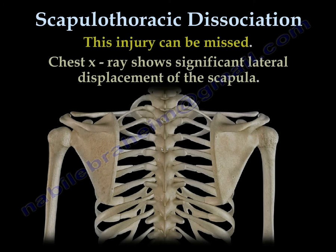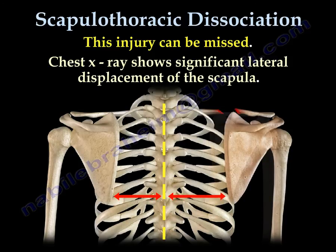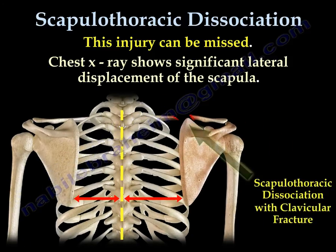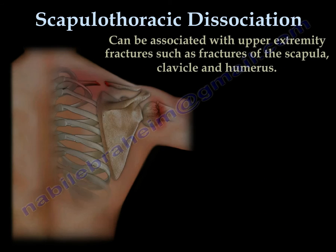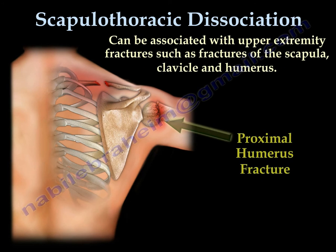This injury can be missed. The chest X-ray will show significant lateral displacement of the scapula. This entity can be associated with upper extremity fractures, such as fractures of the scapula, clavicle, and humerus.